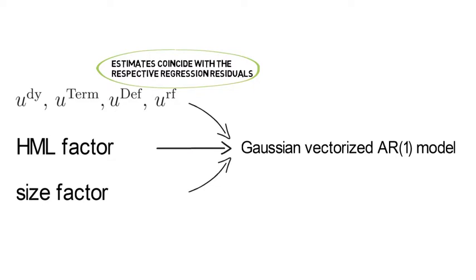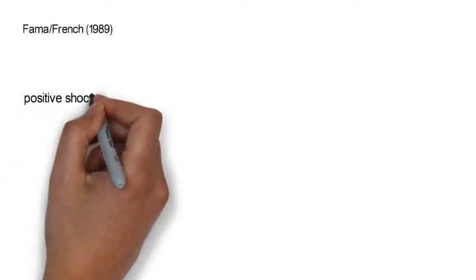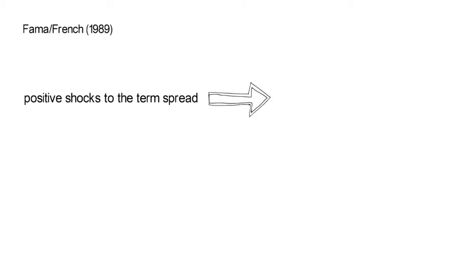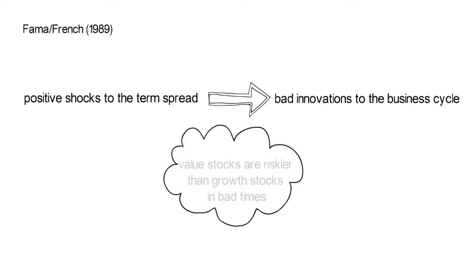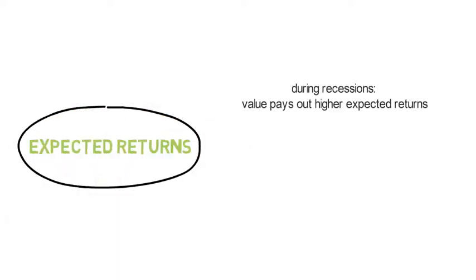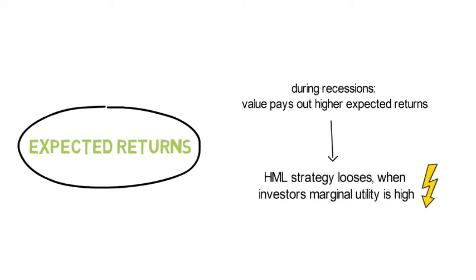So, how to interpret the HML premium of Fama and French given the Petkova finding? Well, Fama and French in 1989 highlight that positive shocks to the term spread signal bad innovations to the business cycle. This implies that value stocks are riskier than growth stocks in bad times. Notice that in terms of expected returns, this means that value pays out higher expected returns in times of rising term spreads, therefore in times of recessions. But that means that the HML strategy loses money during recessions, when investors' marginal utility is high.